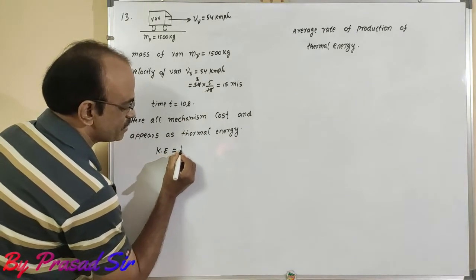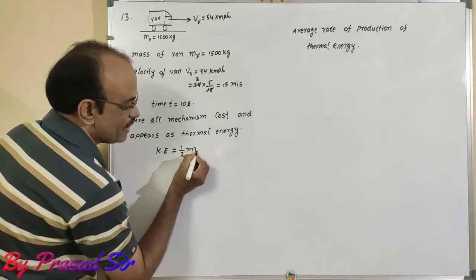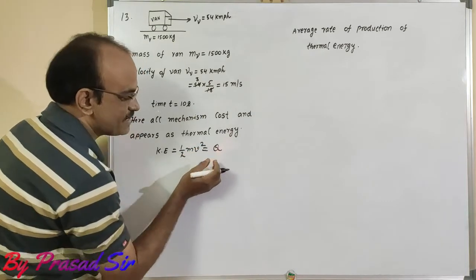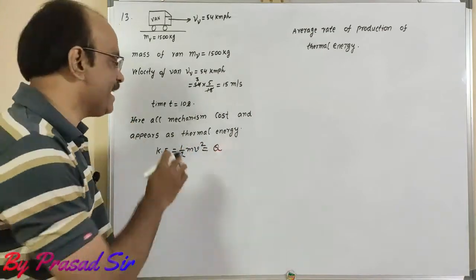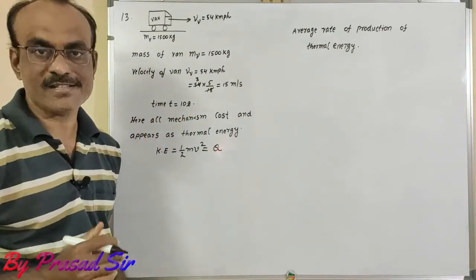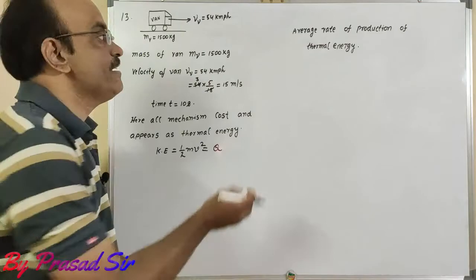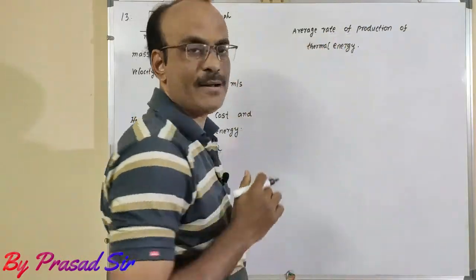Kinetic energy means what is that? Half m v square. It reappears as thermal energy. So, how much time is taken? That is 10 seconds. Which one we want to find here? Average rate of production of thermal energy.